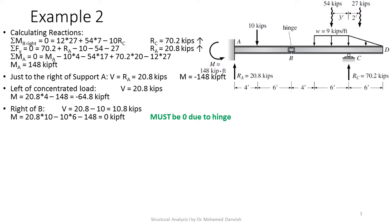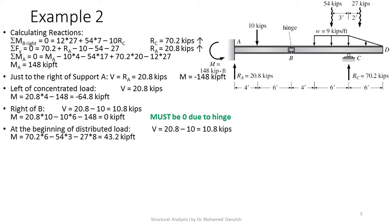This is a critical check: at the intermediate hinge B, the moment must equal zero. The calculation gives 20.8 times 10 minus 10 times 6 minus 148 equals zero kip·ft. If you do not get zero here, something is wrong — you must stop and revise, because the fundamental concept of an intermediate hinge is that it does not transfer bending moment.